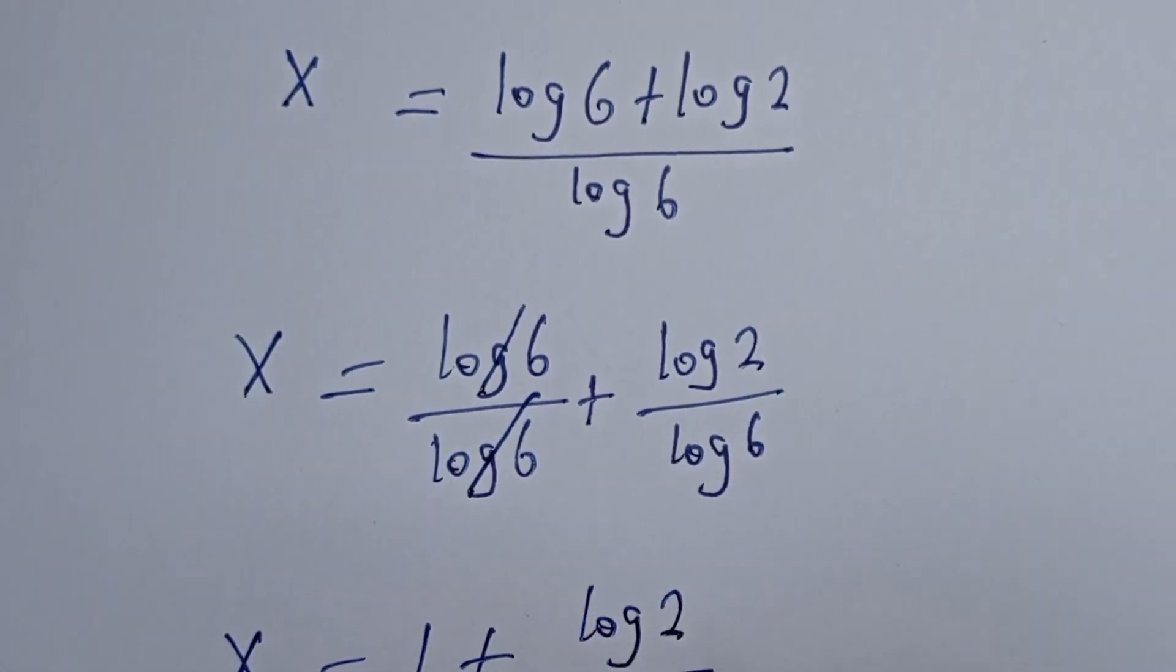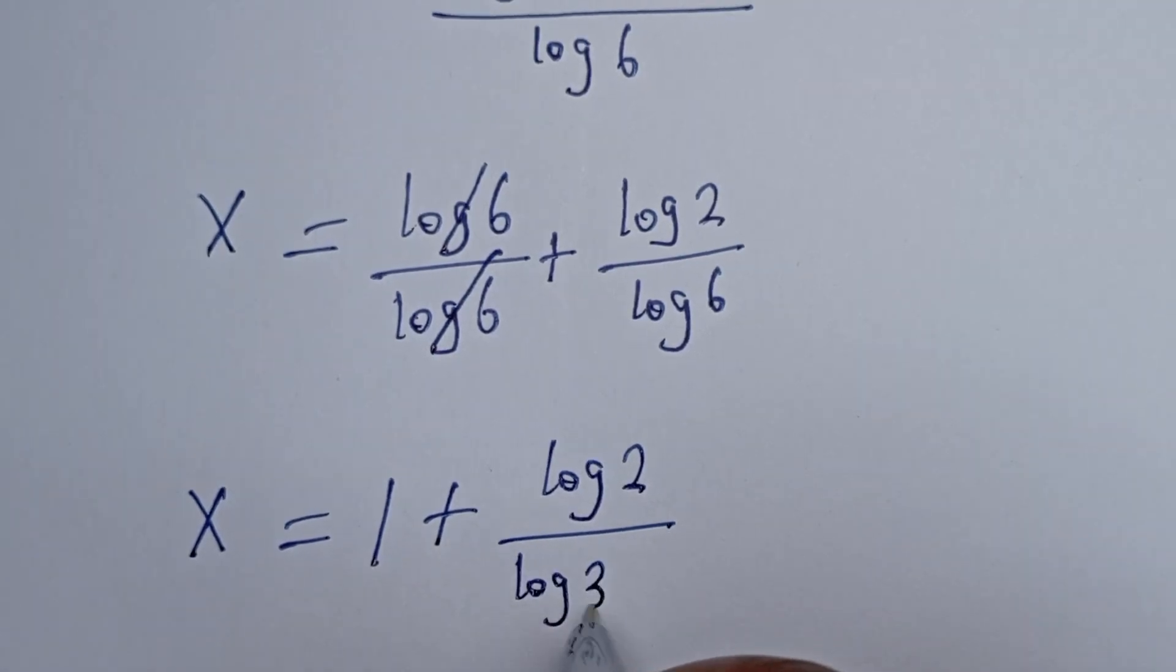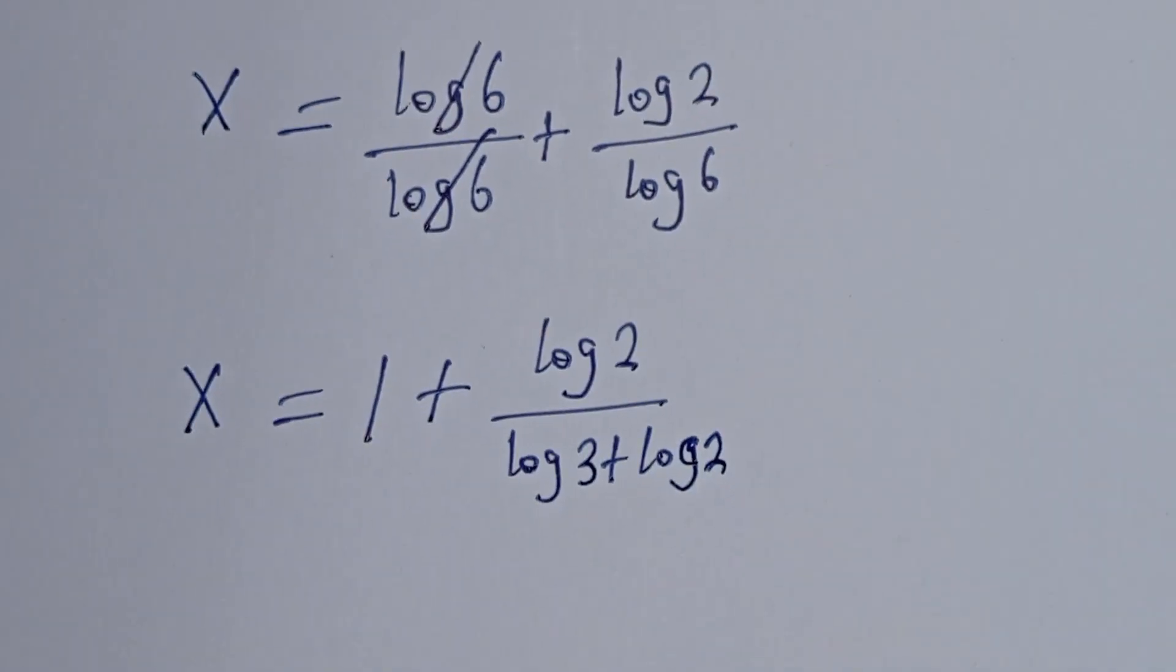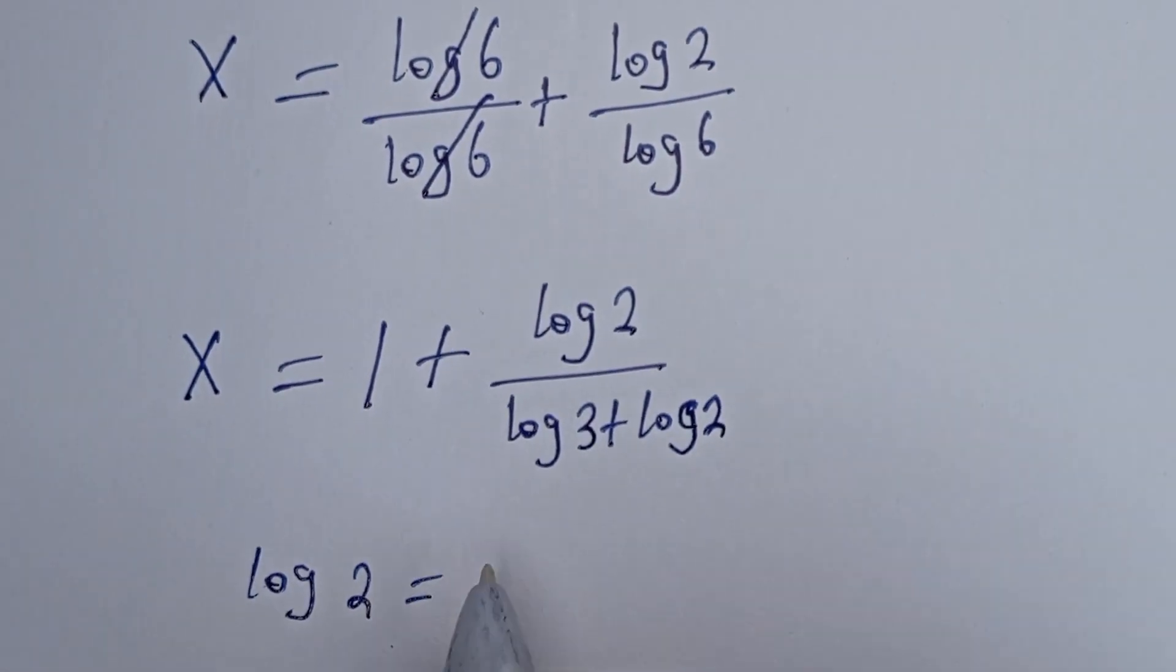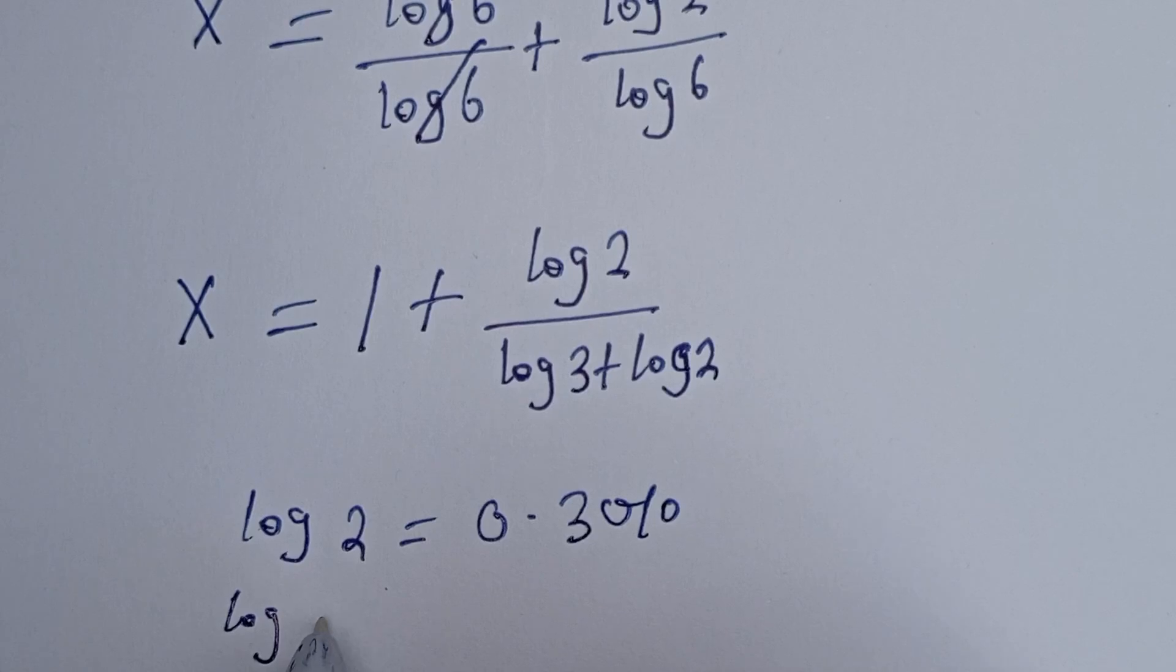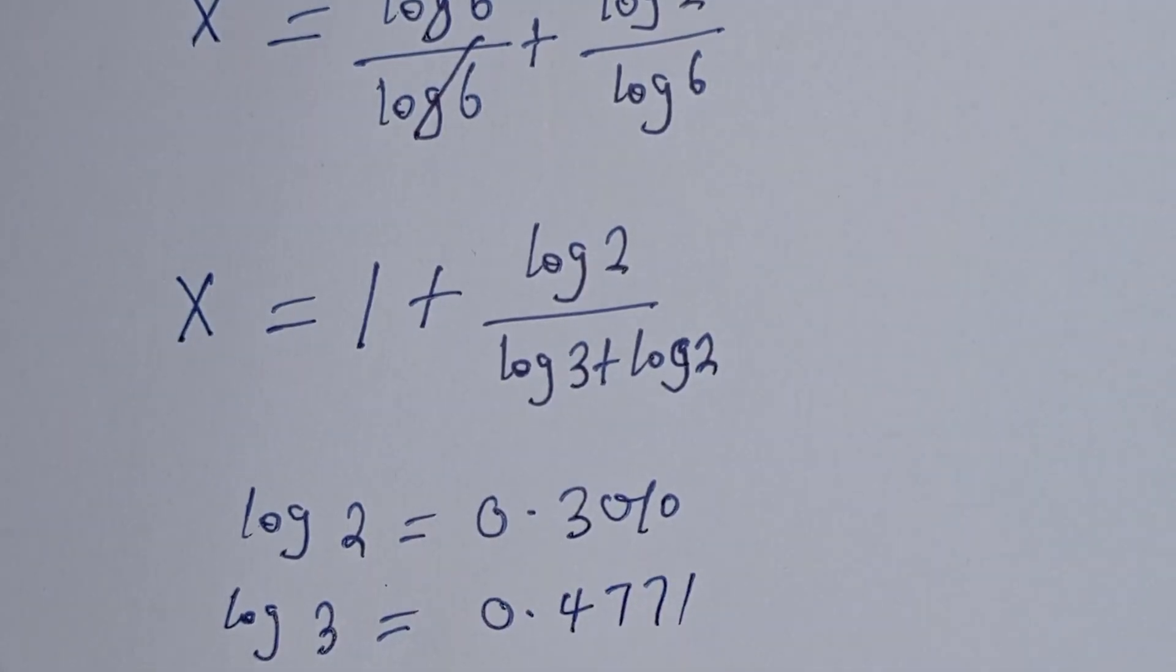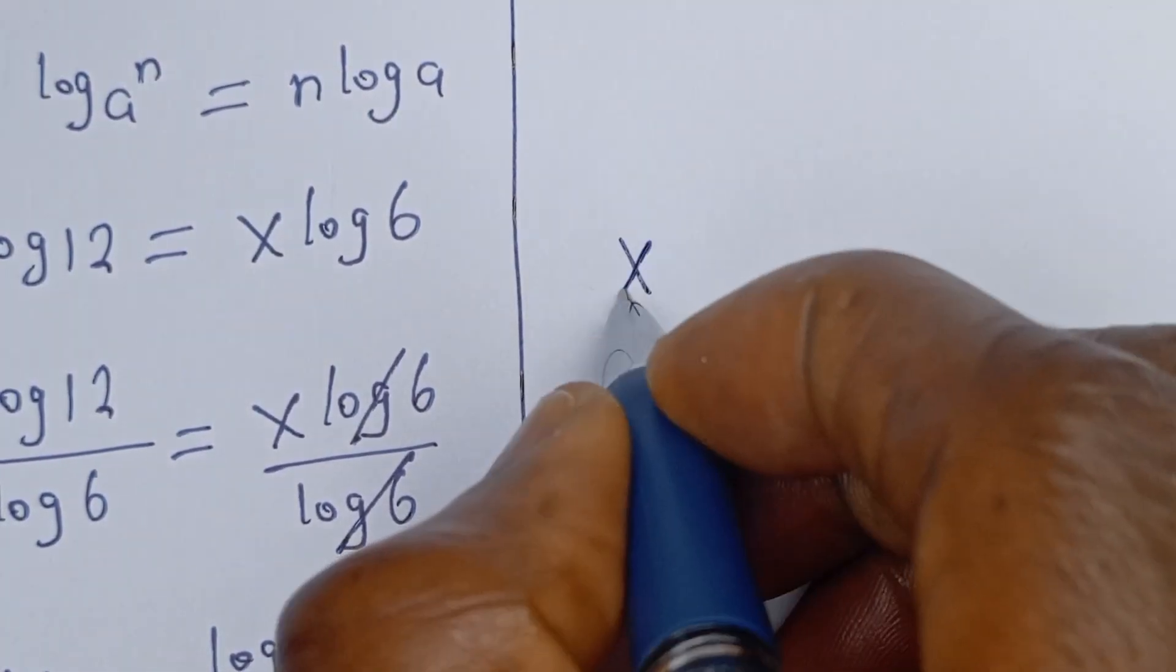log 6 is the same thing as log 3 plus log 2. So we know that log 2 is equal to 0.3010 and log 3 is equal to 0.4771. So let's substitute x to be equal to